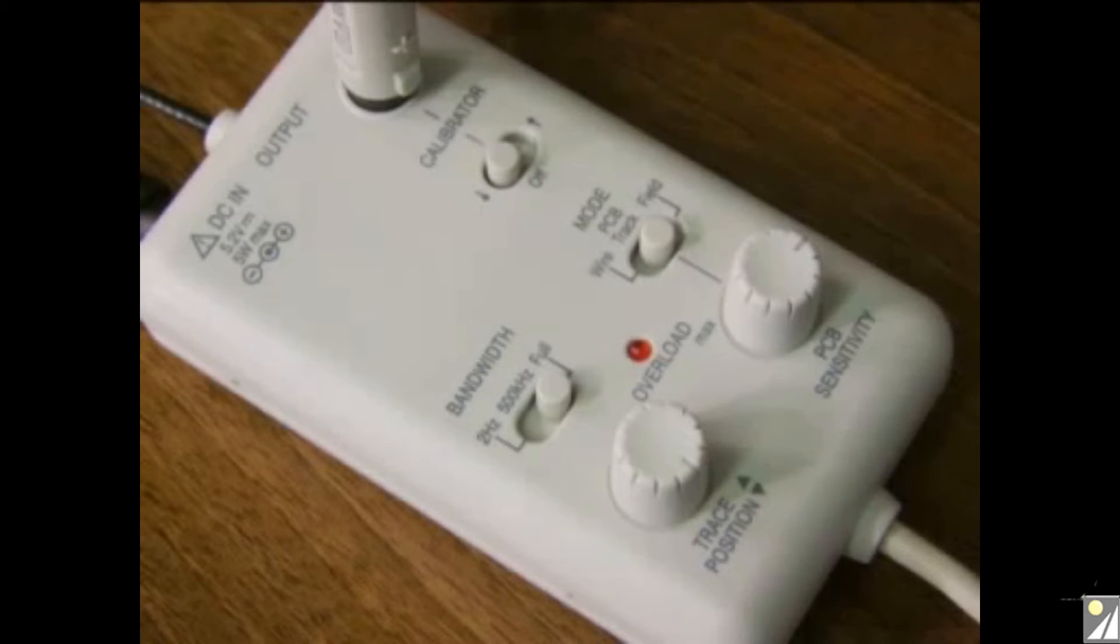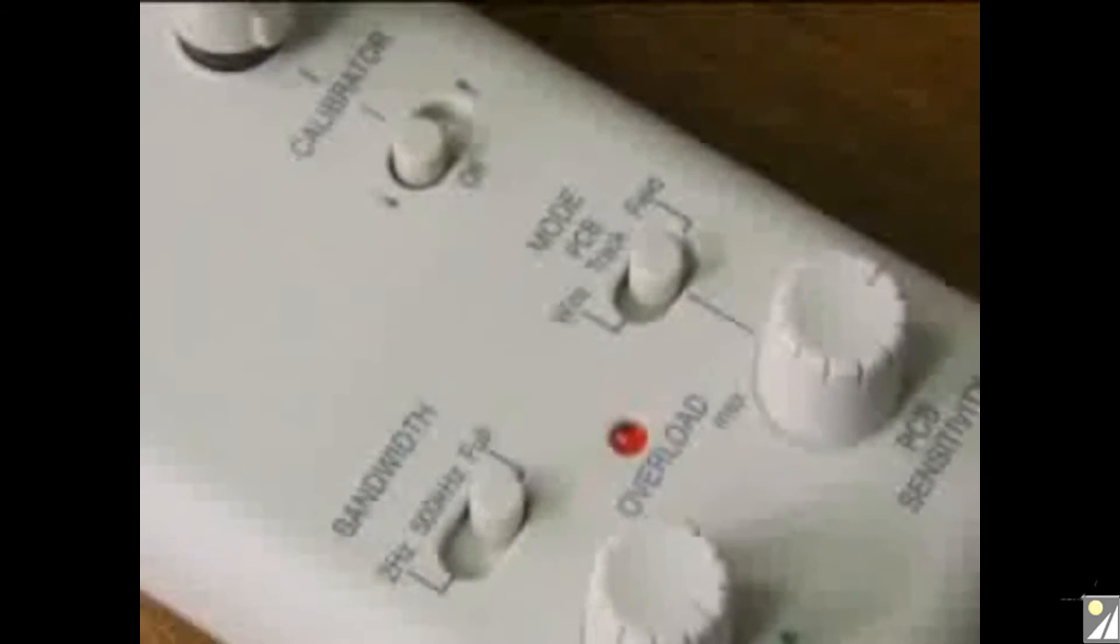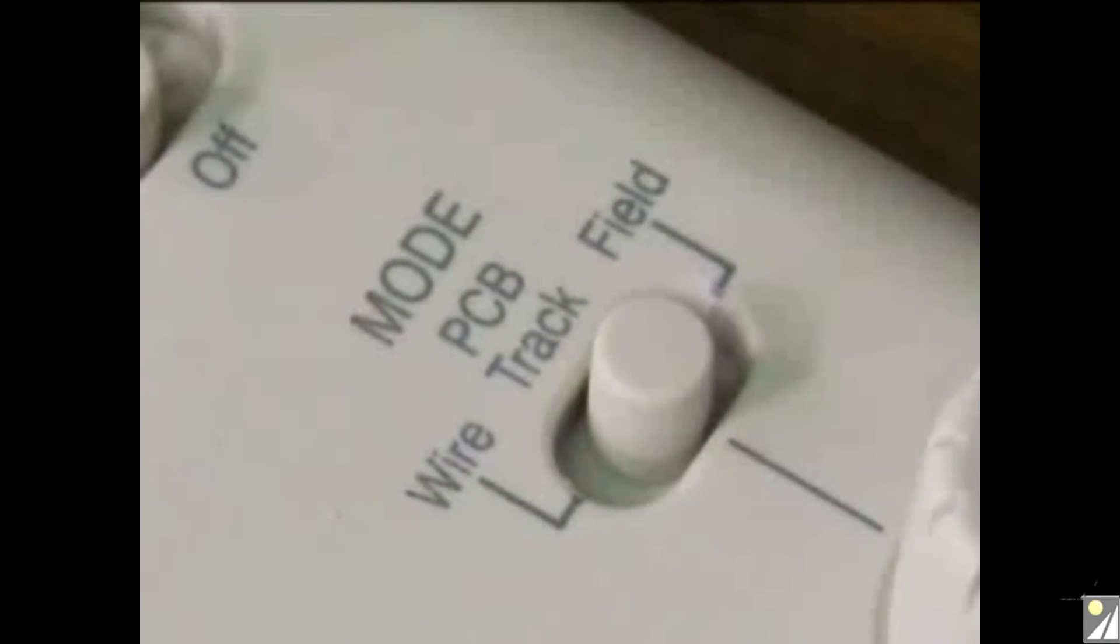So now let's look at the base box. There are three switches and two knobs. The mode switch is marked PCB track, field, or wire.